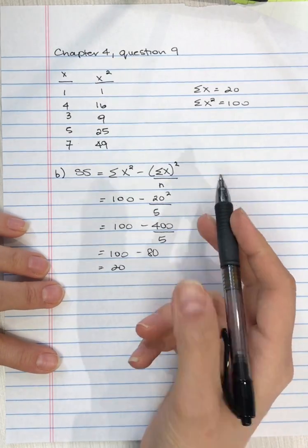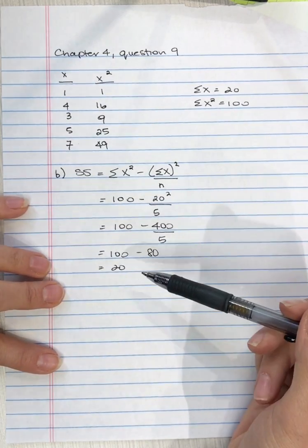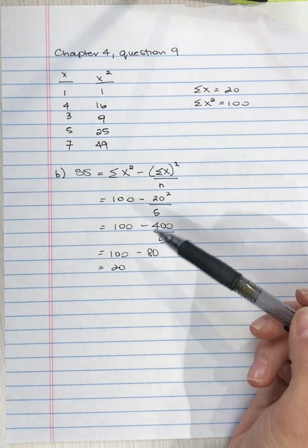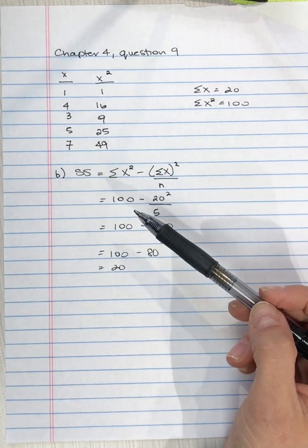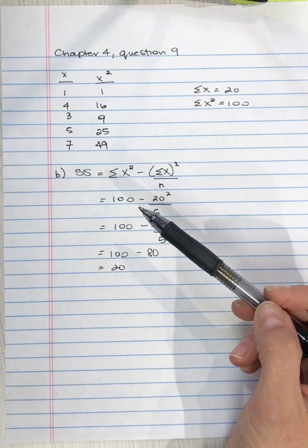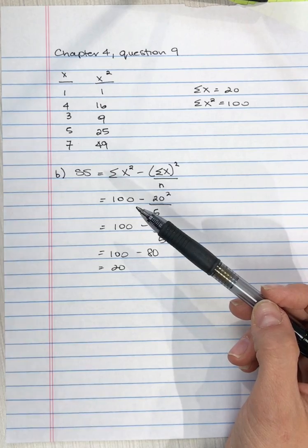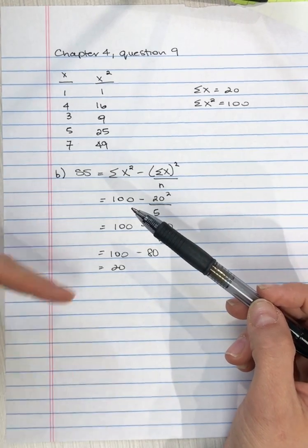What you can see here is that it doesn't matter up until step 3 of the calculation. Calculating the sum of squares doesn't change if you have a population or a sample. If you go back to chapter 4, question 9a, the sum of squares is the same.